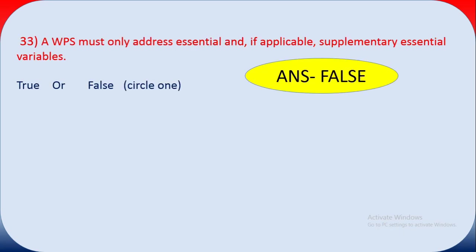Question thirty-three: a WPS must only address essential and, if applicable, supplementary essential variables — true or false? The answer is false.